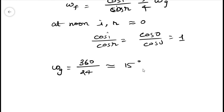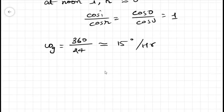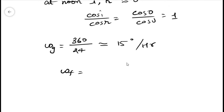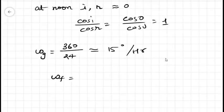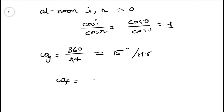So omega f will be equals to 3 by 4 times 15, that is 45 divided by 4, and that is 11.25 degree per hour. Thanks.